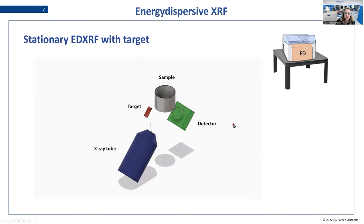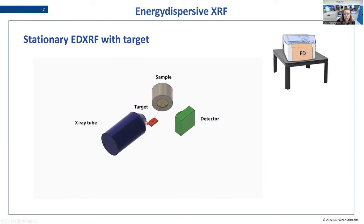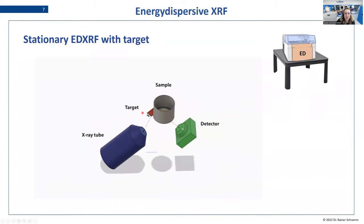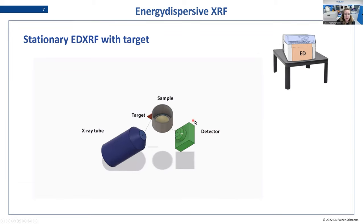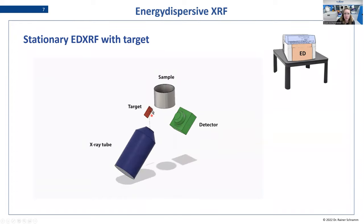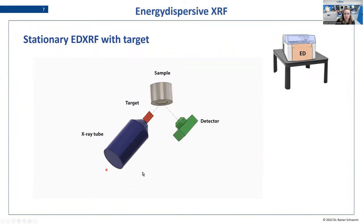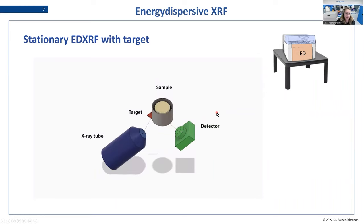The second way this can work is when we have a polarizer between the tube and the sample — here we have indirect excitation. The radiation from the X-ray tube first goes to a polarizer, also called a target, then from the target to the sample, and then to the detector. The thing with the target is that you can improve the peak-to-background ratio, especially in light matrices. However, you do lose a little bit of X-ray power because the radiation has to travel through the target and be polarized.